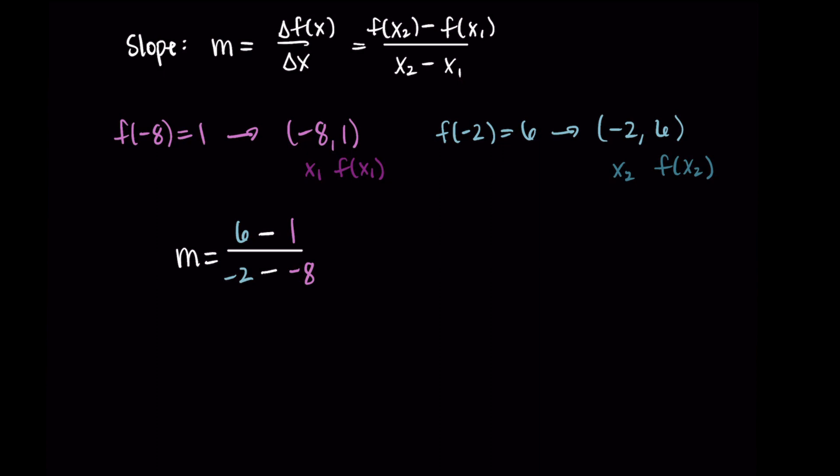So here, it's really important for me to put the x₂ values together and the x₁ values together. Okay, so now I just need to simplify this fraction. In the numerator or on the top of the fraction, I'm getting 5. In the denominator or the bottom of the fraction, I'm getting -2 + 8 because of that minus a negative. Then this just simplifies to 5 over 6. And that's my slope.